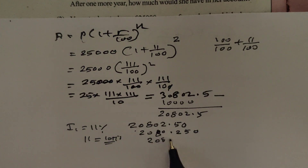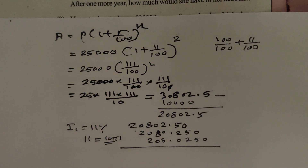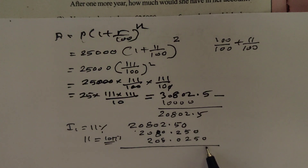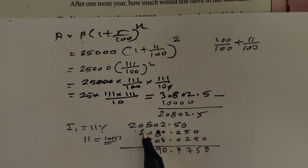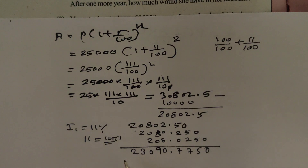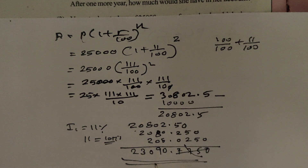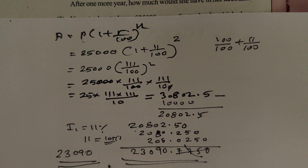Working through the arithmetic: 25 × 111 × 111 divided by 10. Computing step by step — 2 plus 8 is 0 carry 1, 8 plus 1 is 9, 8 plus 2 is 10 carry 1, 2 plus 1 is 3 — gives the final result of approximately 30,802.50 rupees.